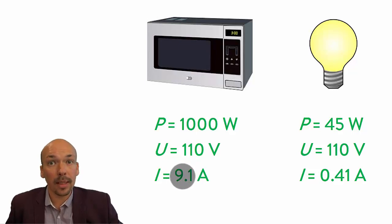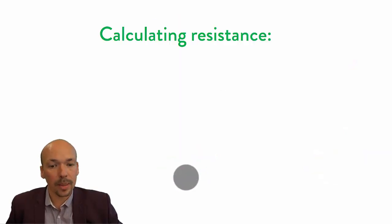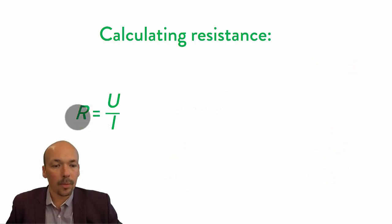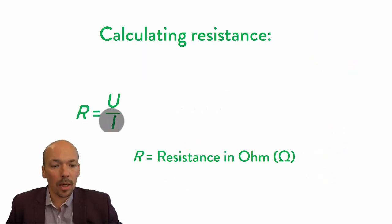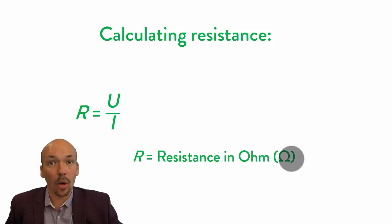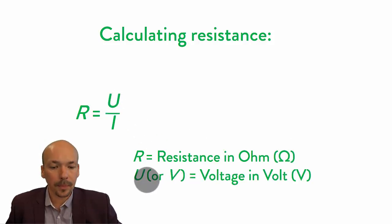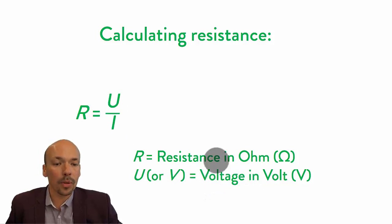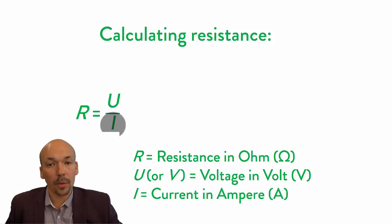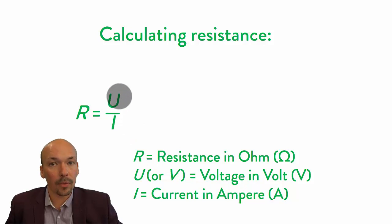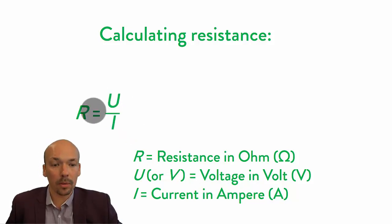To calculate resistance, we use this equation: resistance R, measured in ohm or the capital omega symbol Ω, equals voltage U or V in volts, divided by current I in ampere. So if we divide the voltage by the current, we know the resistance of an electrical component.